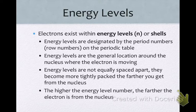Energy levels are the general location around the nucleus where the electron is moving. This is the most general location, not very specific. We want to get more specific. This is talking about something like the general building number on our campus. Energy levels are not equally spaced apart. They become more tightly packed the farther you get from the nucleus. So we're not looking at a perfect dartboard here. We're talking about energy levels that become closer and closer packed together. The higher the energy level number, the farther the electron is from the nucleus.